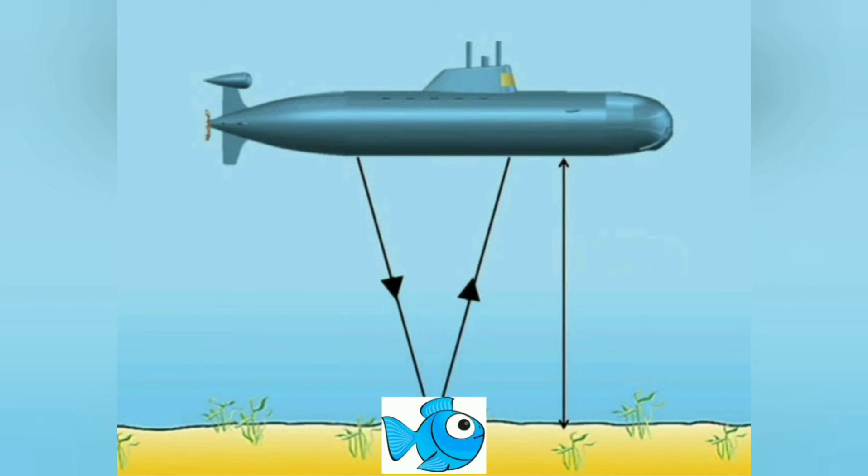Submarines use sonar to locate a target. It uses active and passive sonar. Active sonar emits pulses of sound waves that travel through the water and get reflected back after hitting the object to the ship. Whereas passive sonar listens to the sounds produced by the target.